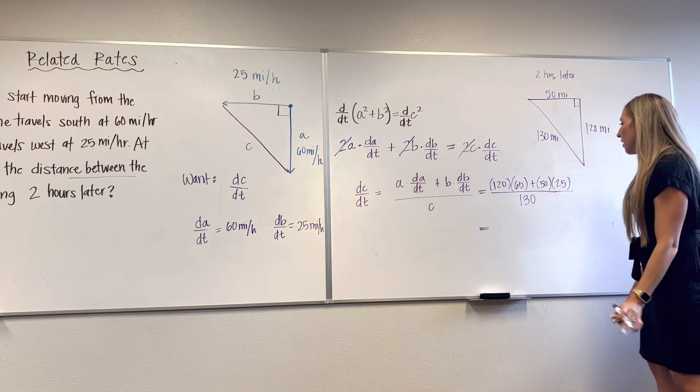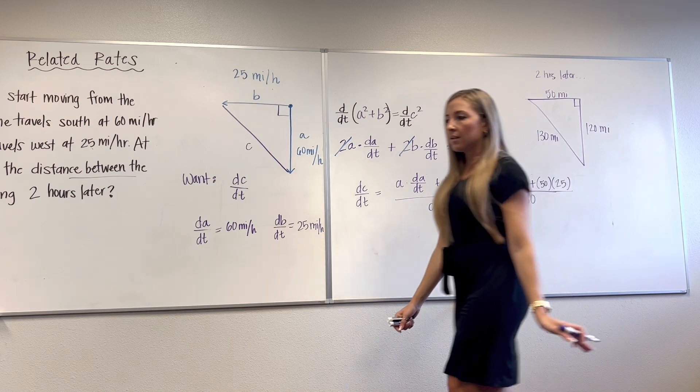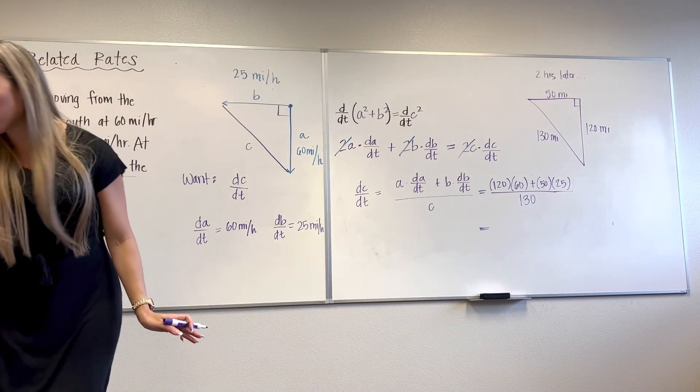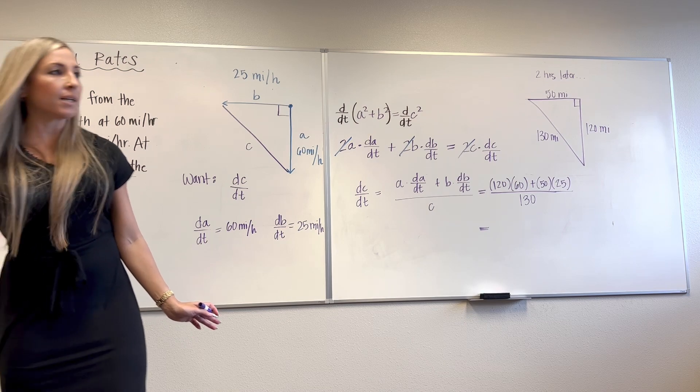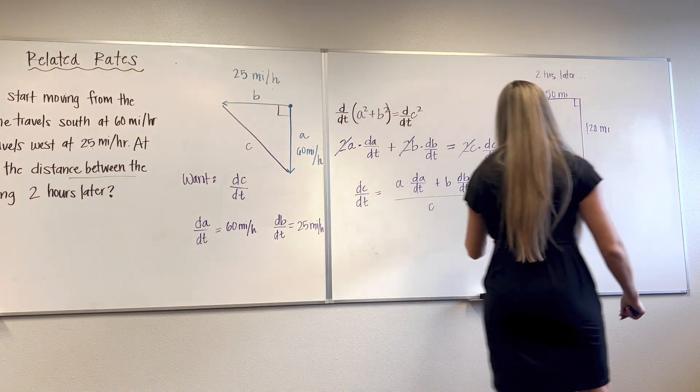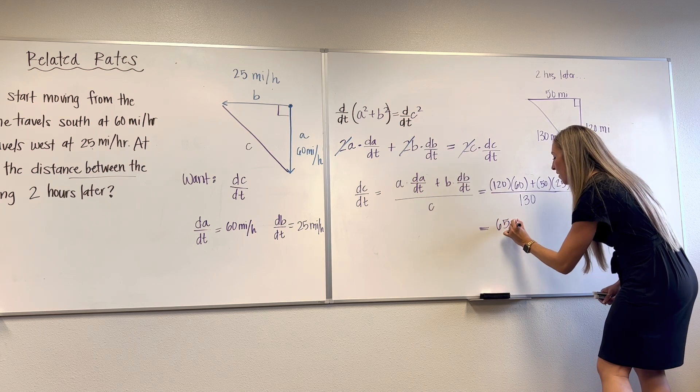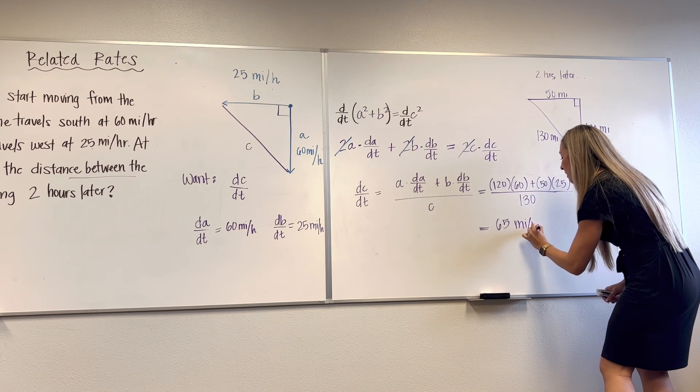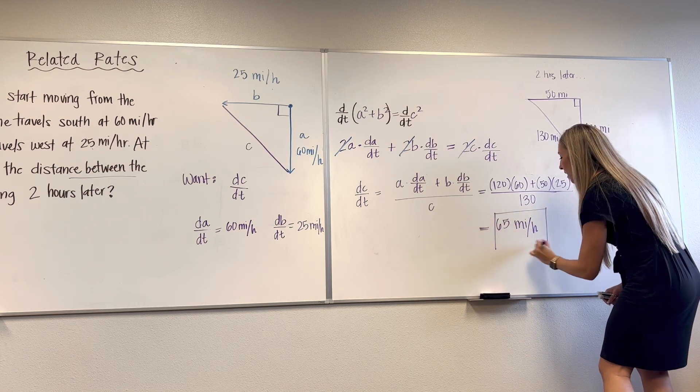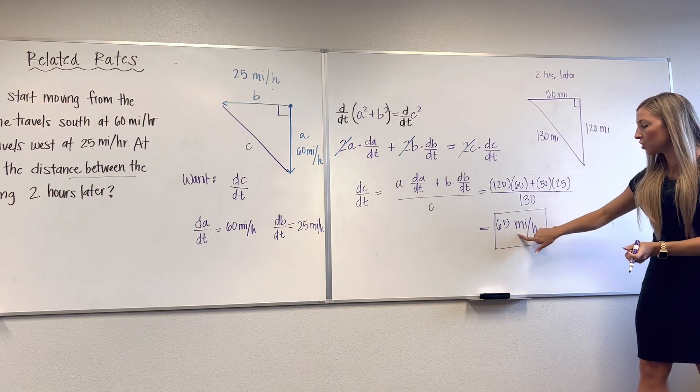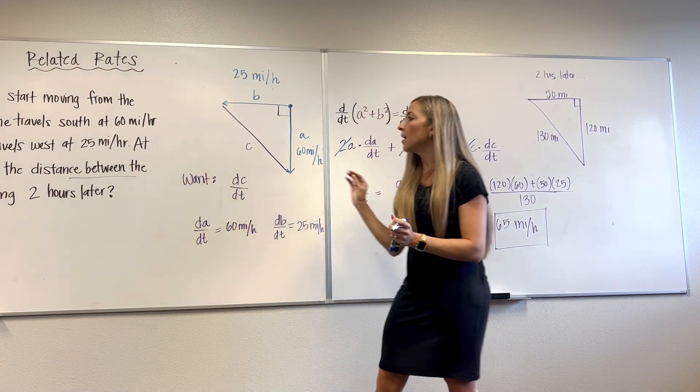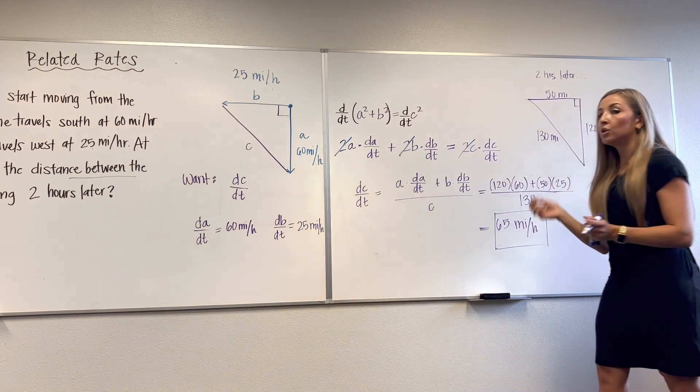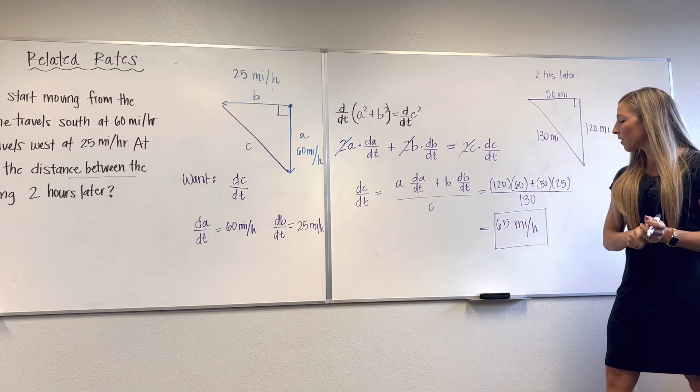And then, well, I did it already, so let me just tell you. 120 times 60. Beautiful. 65 miles per hour. Make sure you put units on the final answer, though. So this is the rate of change of the distance between the two cars, C, with respect to time, two hours after they take off.